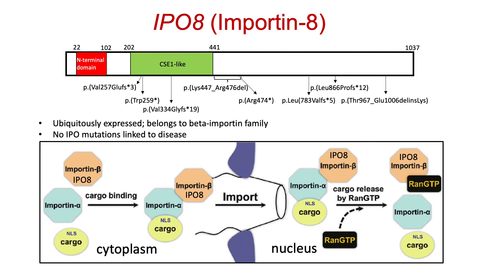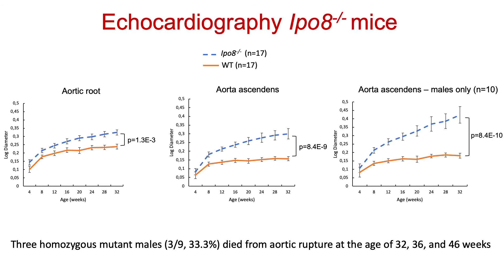In order to better study the function, we created mice in which we could look at the possible cargos. In the literature, SMAD proteins have been reported as potential cargos. We did extensive cardiovascular imaging and showed that mice lacking this protein do develop aneurysms both at the root and the ascending aorta, and there seemed to be a male predisposition — males develop worse aneurysms mostly at the ascending compared to females, although females also develop them. We only observed aortic dissection and rupture in three homozygous mutant males between age 32 and 46 weeks.